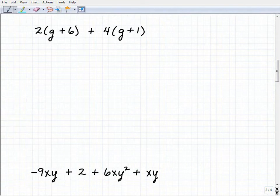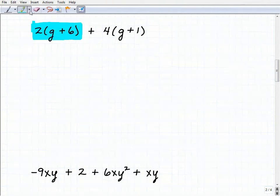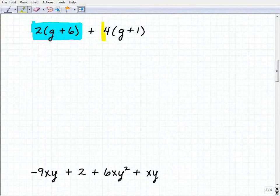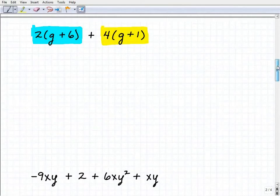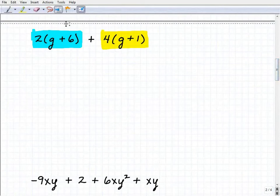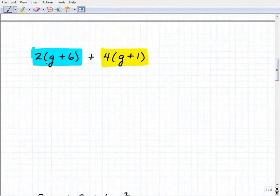All right, so let's look at our first one. We have 2 times g plus 6, plus 4 times g plus 1. All right, so each one of these I'm going to have to employ the distributive property. Okay, so I can't see the terms the way they're written right now.